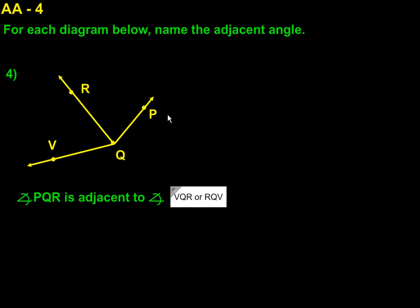For each diagram below, name the adjacent angle. So for number four, we have PQR, which is right here, PQR. And it's adjacent to VQR or RQV.